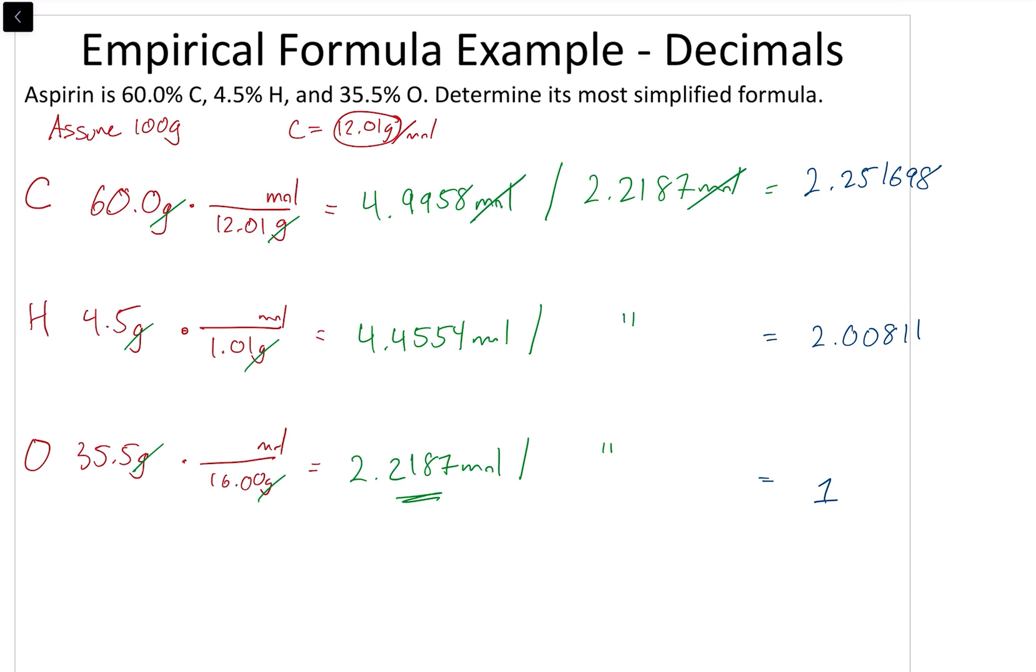Now, let's look at the hydrogen first. Let's work our way back up. This right here can be rounded down. It's very close to 2. So, we are going to round this to 2.